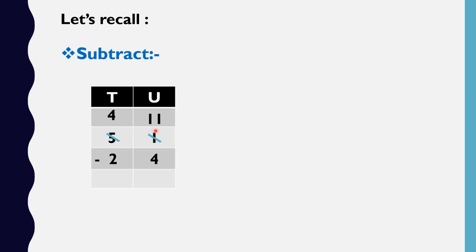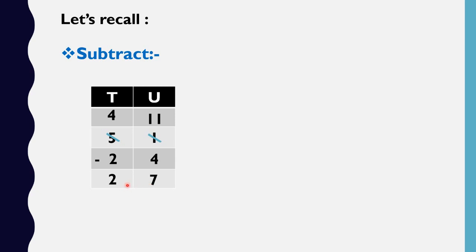So 11 minus 4 — what is the answer, students? Very good, 7. And in the 10's place, 4 minus 2 — what is the answer? Very good, 2 is the answer. So 2 tens and 7 units, that is 27.